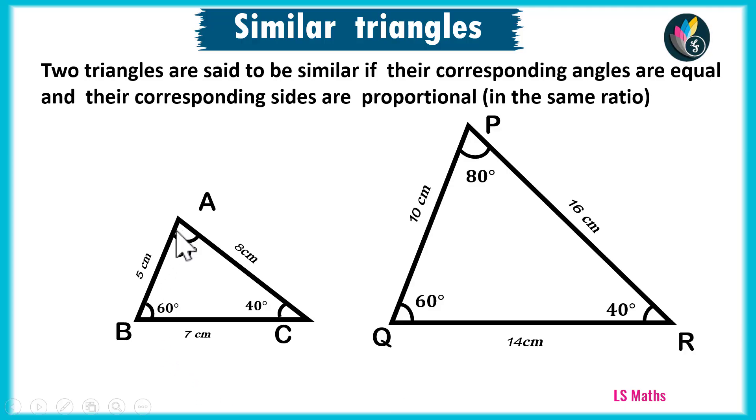But what about the sides? AB is 5 cm, PQ is 10 cm. BC 7 cm, QR 14 cm. AC is 8 cm, whereas PR is 16 cm. We can see the sides are proportionally increased. AB by PQ, BC by QR, CA by RP is equal to 1 by 2.